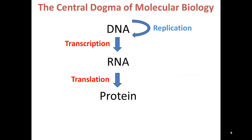To review, we've been learning about the central dogma in molecular biology, in which DNA is used to make RNA via the process of transcription, and RNA is used to make protein via the process of translation.